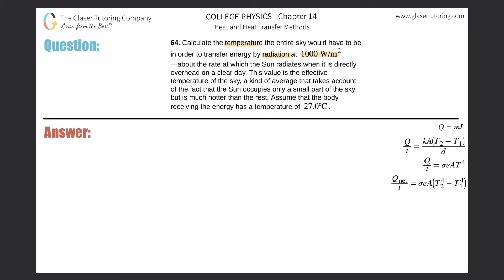...that the sun occupies only a small part of the sky but is much hotter than the rest. Assume that the body receiving the energy has a temperature of 27 degrees Celsius. Alright, so we're talking about radiation. They're asking us to calculate a temperature and they give us another temperature, so more than likely we're using this formula over here about net power.